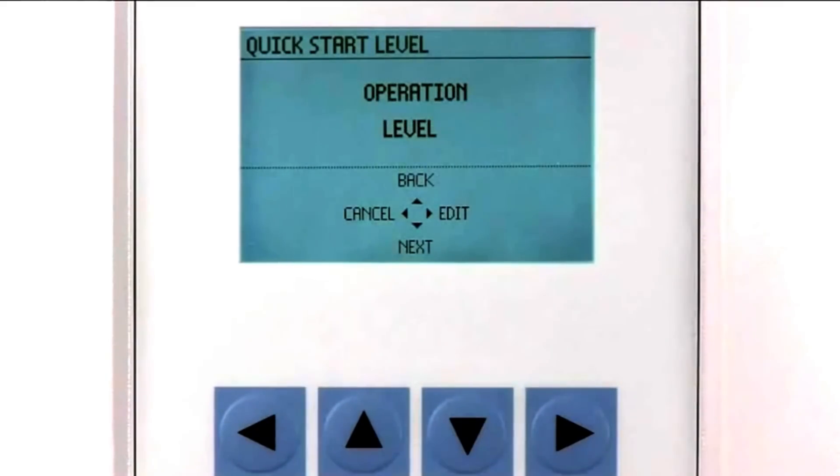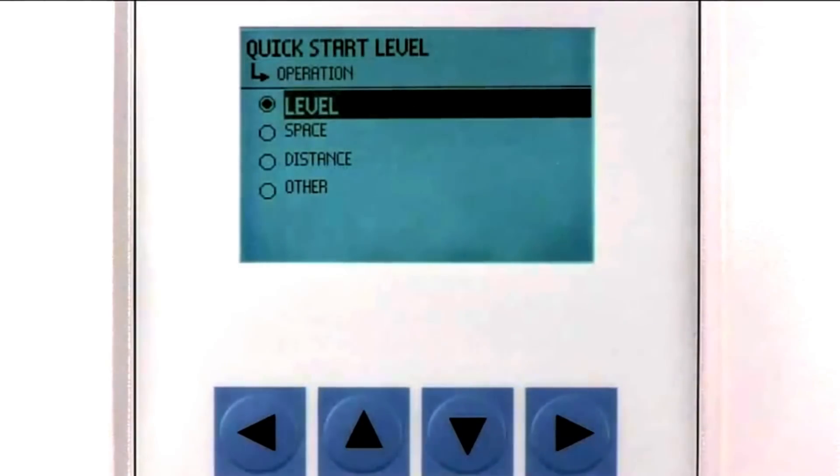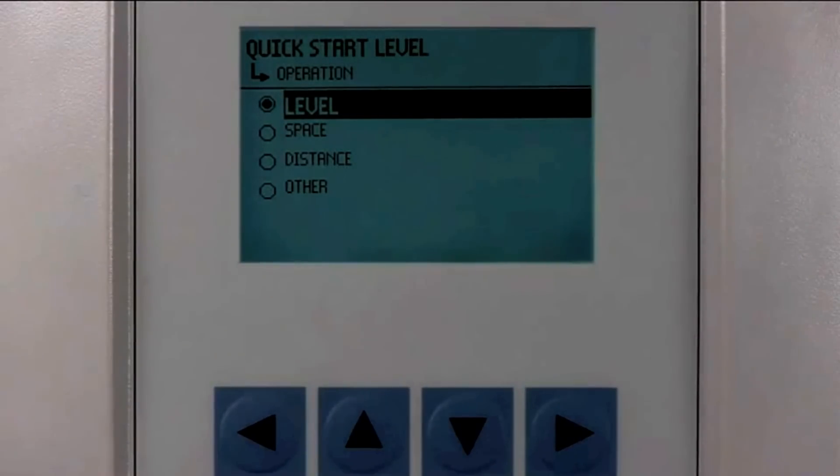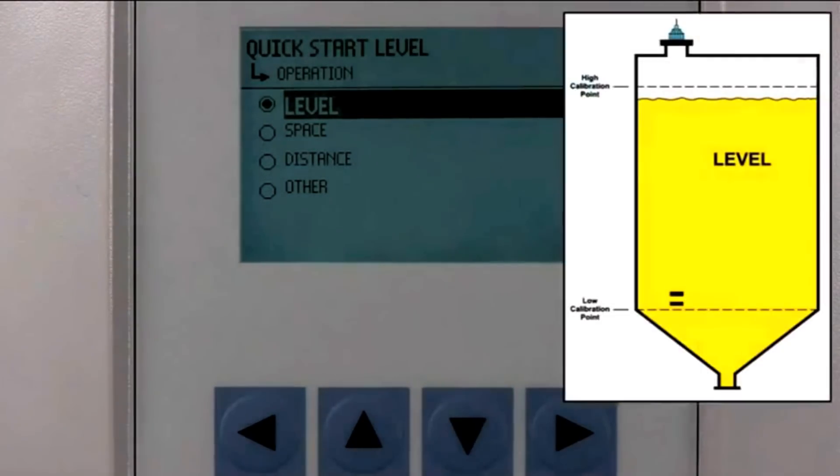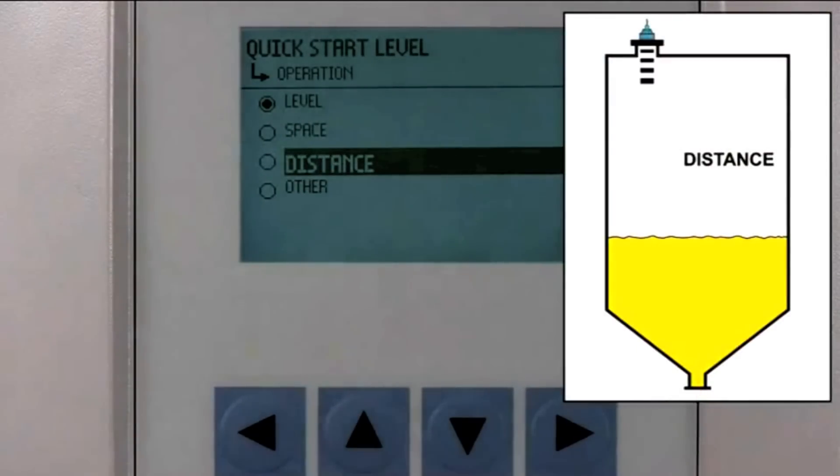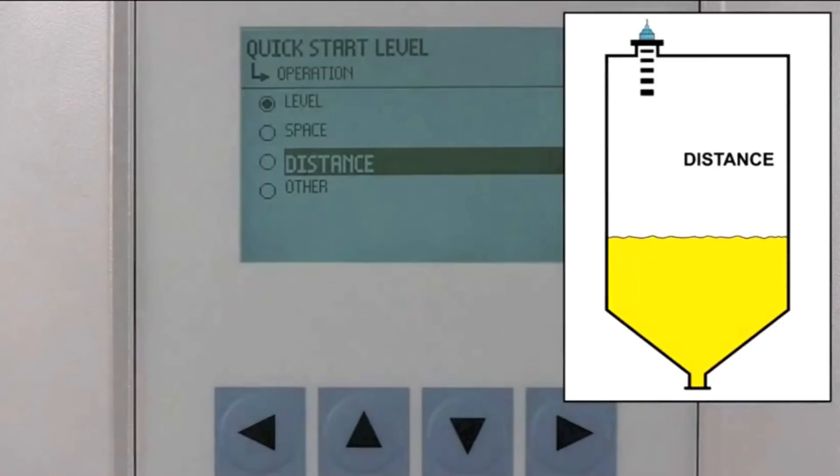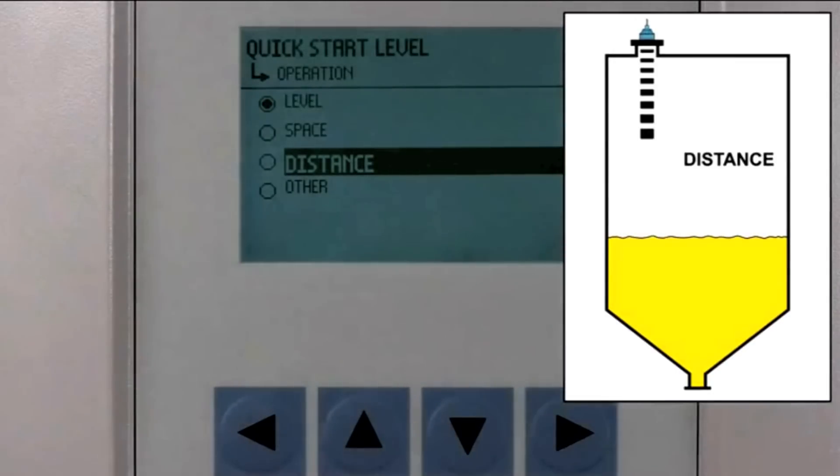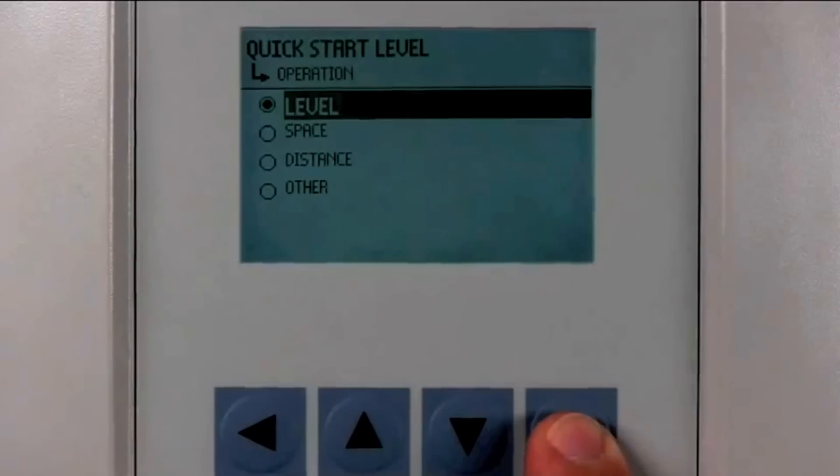The Operation parameter defines the measurement mode used to calculate the displayed value and the corresponding milliamp output. There are three choices for this parameter: level, space, or distance. The level mode measures the height of the material in the vessel from the low calibration point to the high calibration point. The Space mode measures the distance from the high calibration point to the material surface. The Distance mode measures the distance from the transducer face to the material surface. In our application, we will select the level mode.